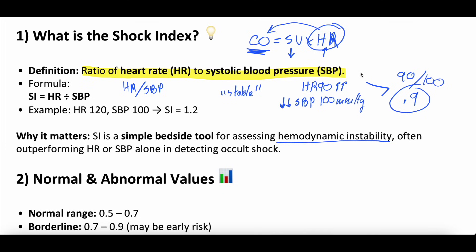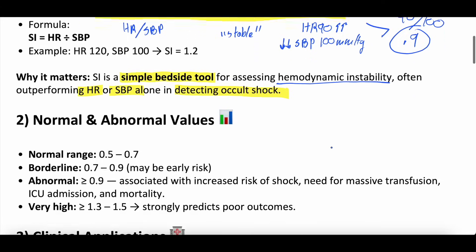But the systolic blood pressure then starts to drop because the heart rate can't keep up — the compensatory mechanisms can't maintain cardiac output. The shock index is supposed to identify when we're starting to tip over that edge. It's a simple bedside tool: you walk in the room, look at vital signs, and calculate a quick shock index. It usually outperforms heart rate or systolic blood pressure alone in detecting occult shock, end-organ injury, or impending decompensation before a patient is overtly hypotensive.